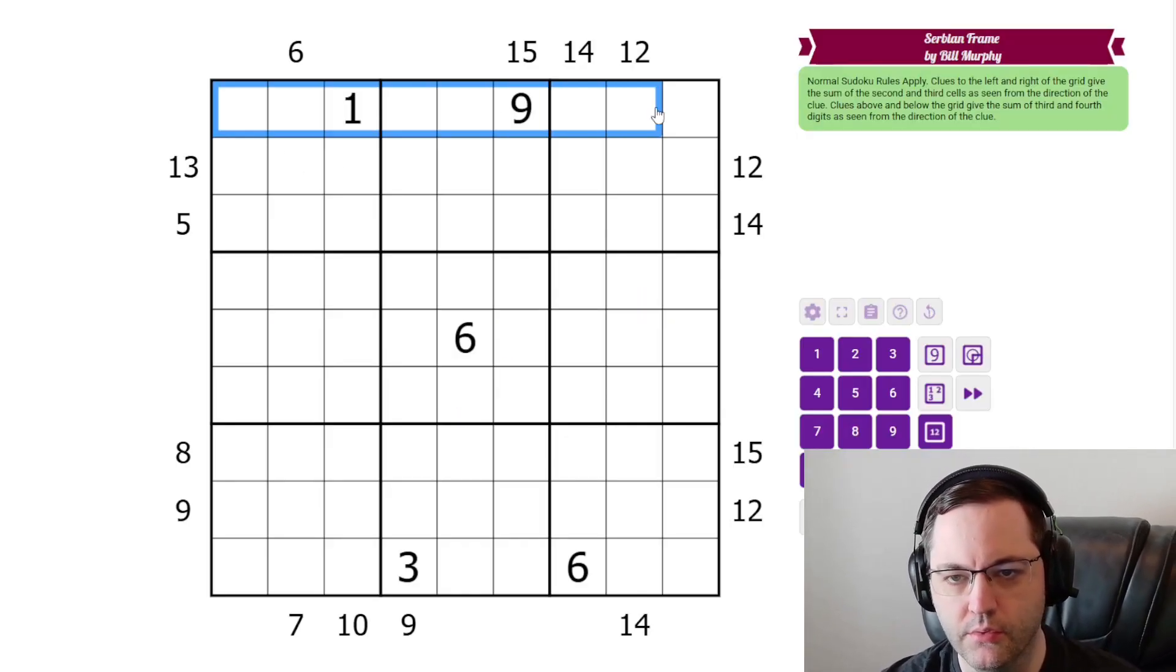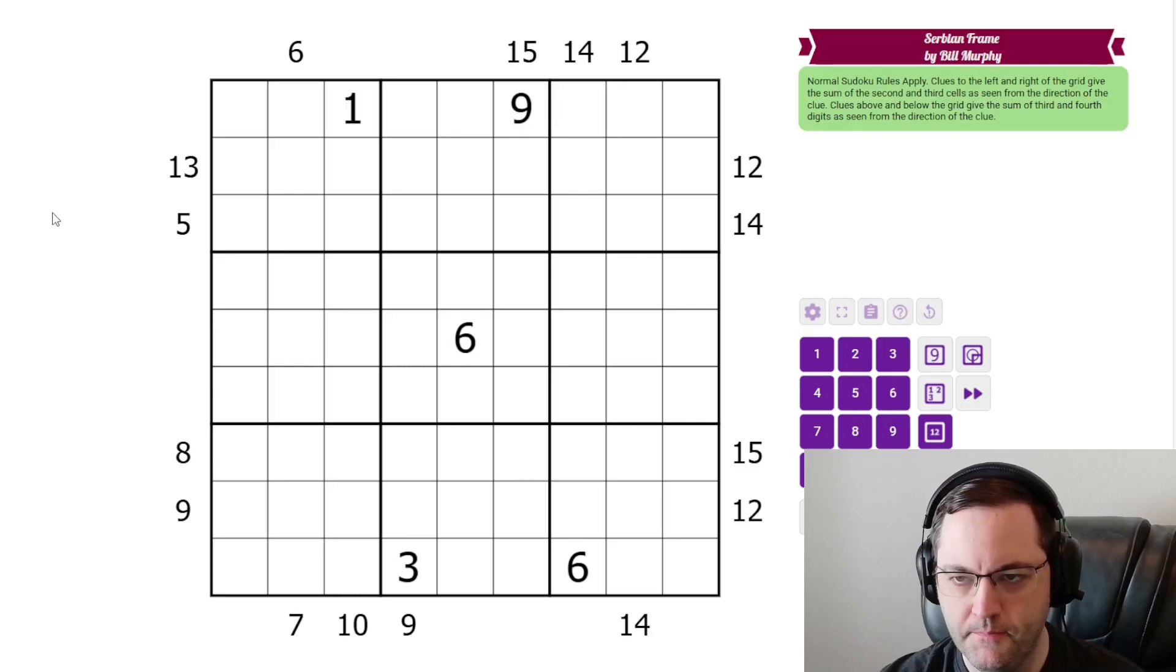We have normal Sudoku rules, one to nine in each row, column, and three by three box. Additionally, we have some clues outside the grid, and depending on the direction, these work a little differently.